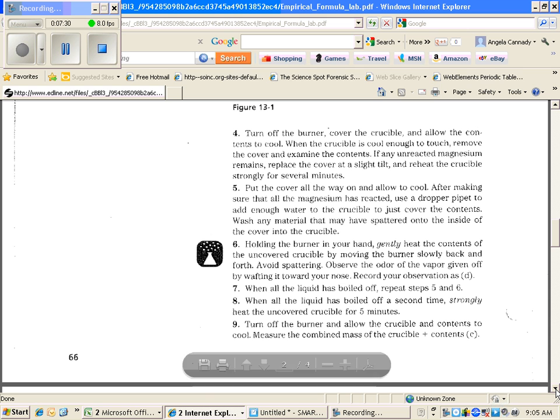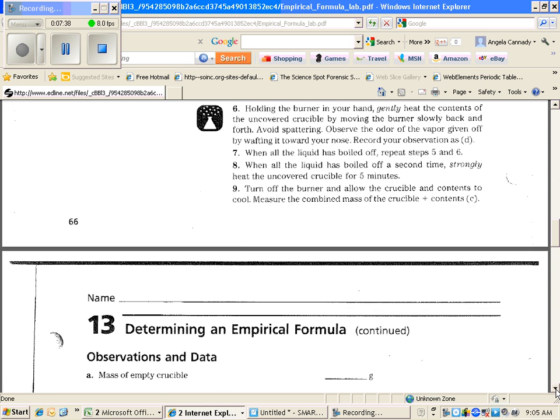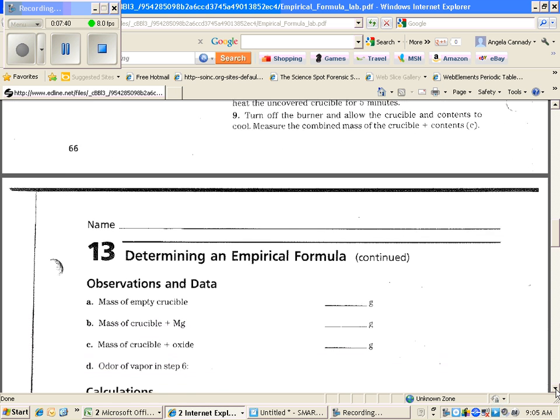So we weighed just the crucible. Then we weighed the crucible and the magnesium before it reacted. Now in step nine, we're finally weighing it again, finding the mass. And that is what we're going to use.